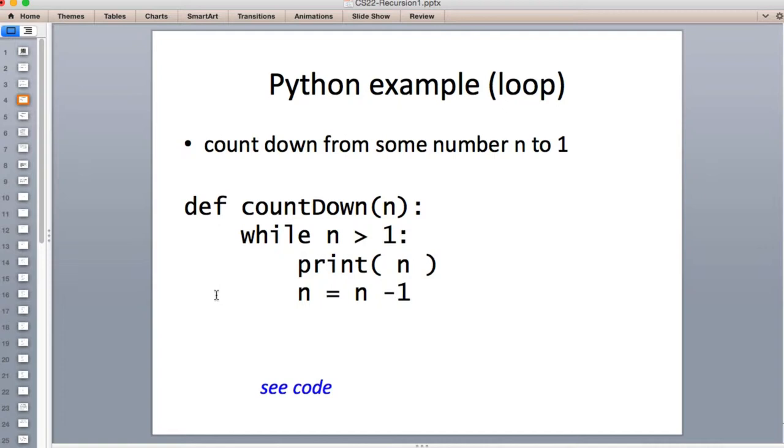We're going to look at the first Python example. We want to have a method or function that counts down from a number you give it. You give it a number n, and it should print out 10, then 9, then 8, and count down all the way to 1. You can count down from 3 or from 10. You give it the starting number, and it prints out the numbers until it gets down to 1.